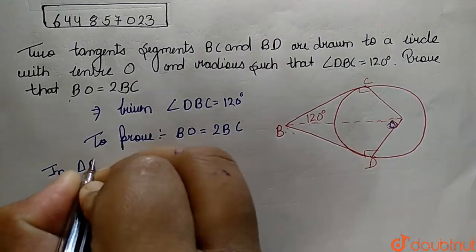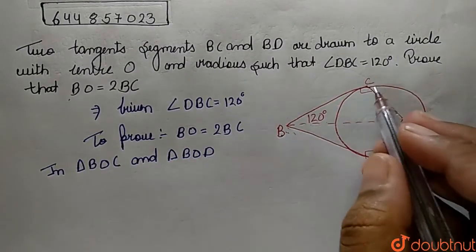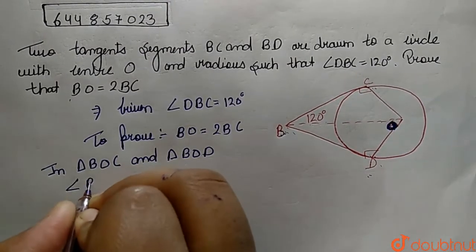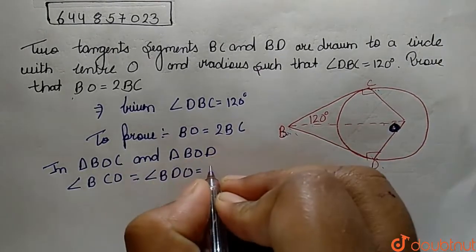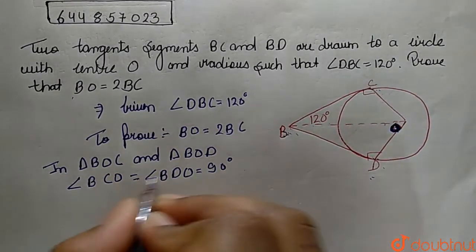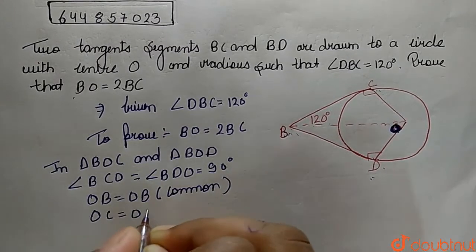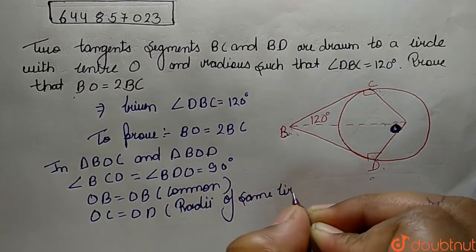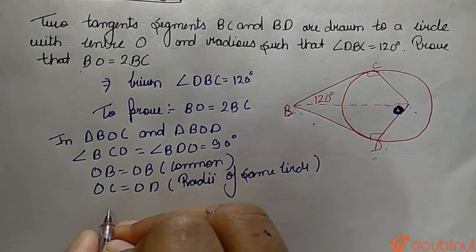In triangles BOC and BOD, angle BCO equals angle BDO, both equal to 90 degrees, since the tangent at a point on a circle is perpendicular to the radius. Also, OB equals OB (common side), and OC equals OD (radii of the same circle). By RHS congruency, triangle BOC is congruent to triangle BOD.